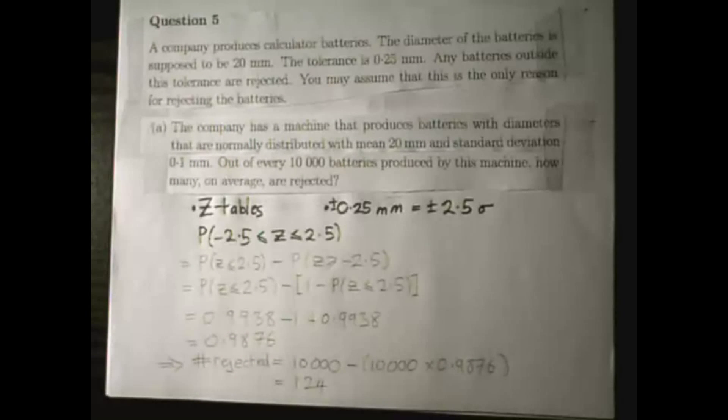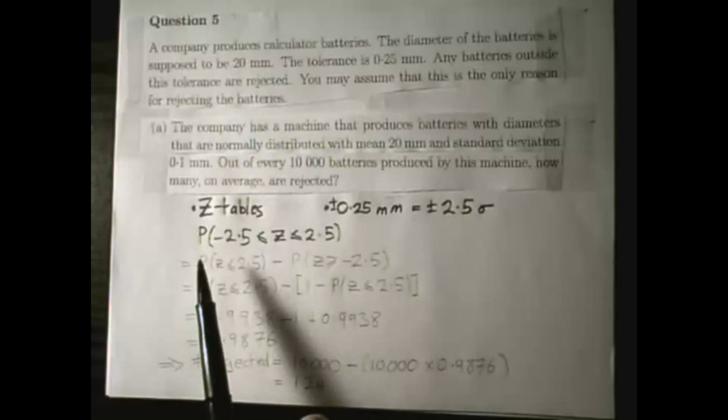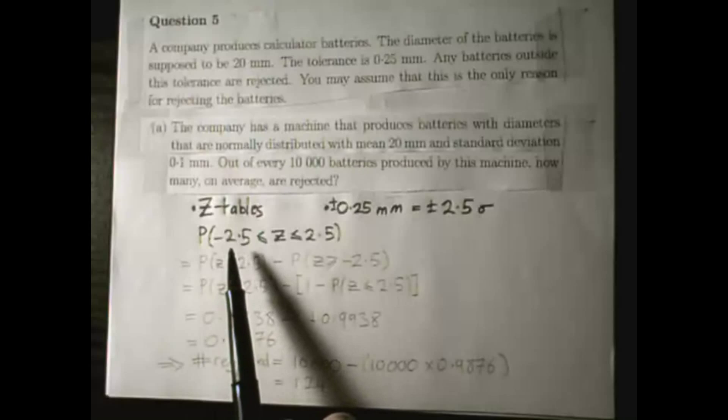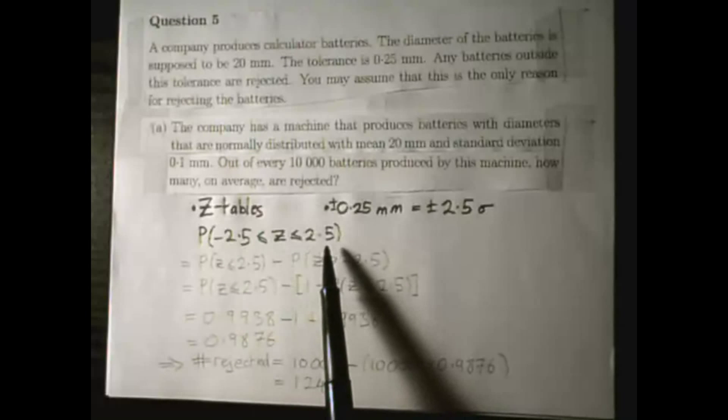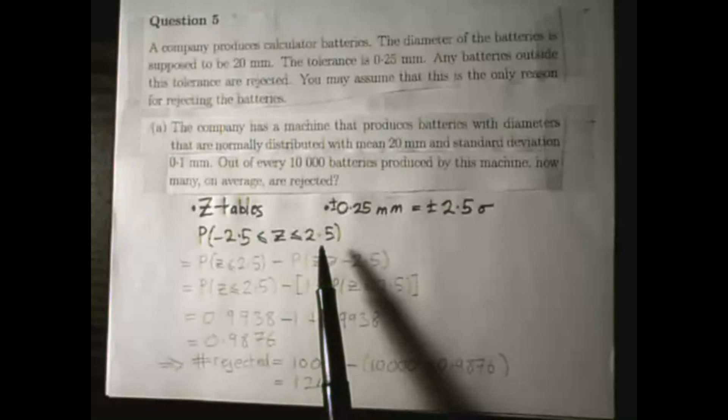I'm going to work out what percentage of them are accepted rather than rejected first. So anything between minus 2.5 standard deviations and plus 2.5 standard deviations is going to be accepted.